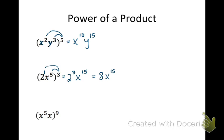For this last power-of-a-product example, we have (x to the 5th times x) to the 9th. Before dealing with the 9, simplify the inside first: x to the 5th times x — put a 1 on the bare x — and add exponents: 5 plus 1 is 6, giving x to the 6th inside. Now multiply: 6 times 9 is 54, so the answer is x to the 54th.